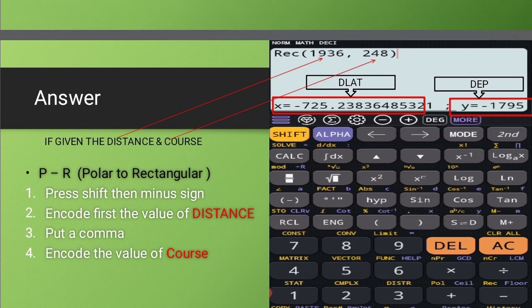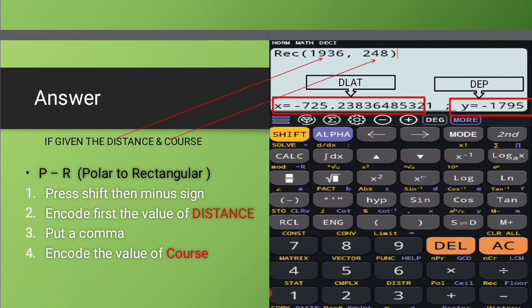you will have the value of x and y. So the answer for the difference of latitude disregarding the negative sign will be the value for x. And for the departure, you have the value for y.